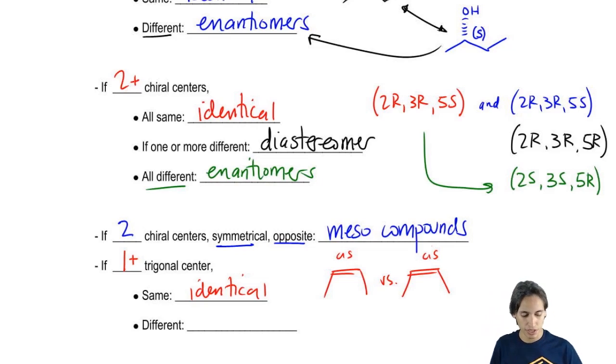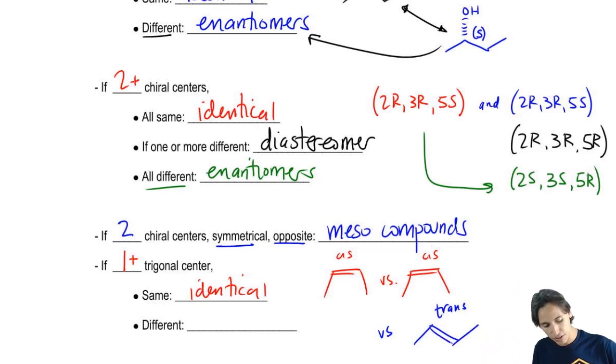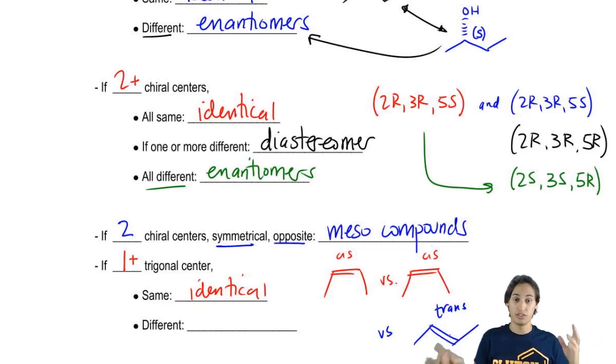But what if I'm comparing it to that one versus the trans versus trans-2-butene? What's that relationship going to be? It turns out that these are definitely stereoisomers. They look different, but they're not mirror images. One is not the mirror image of the other, so these are actually going to be diastereomers.